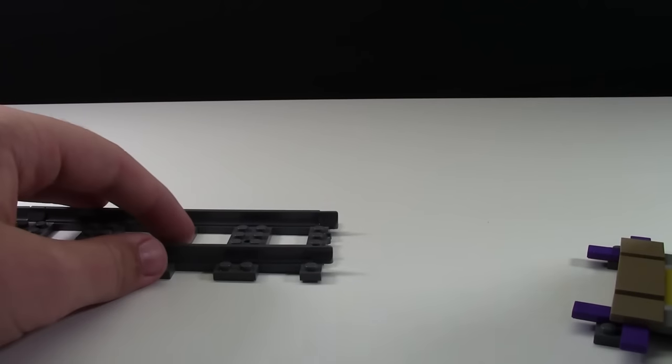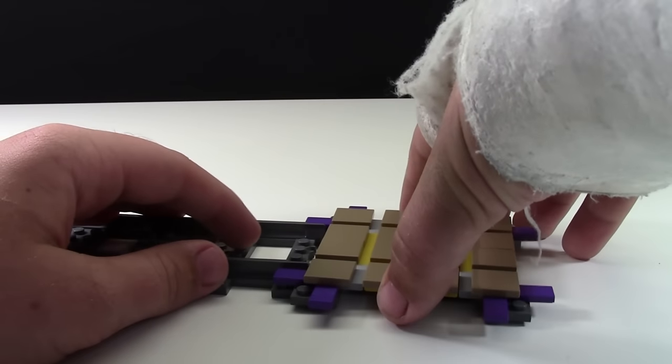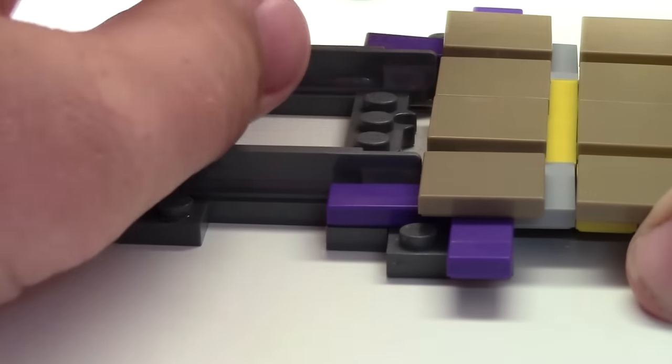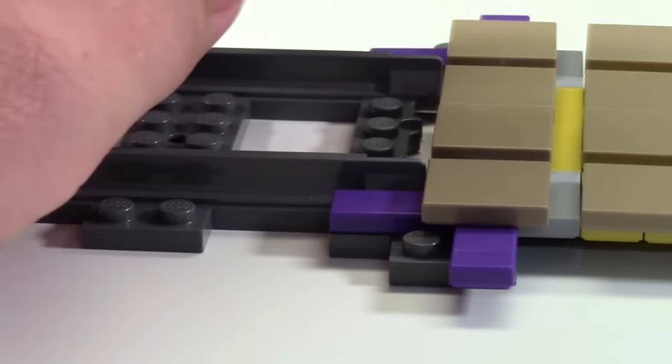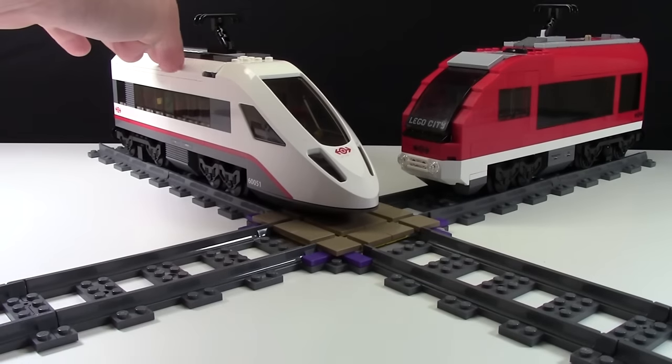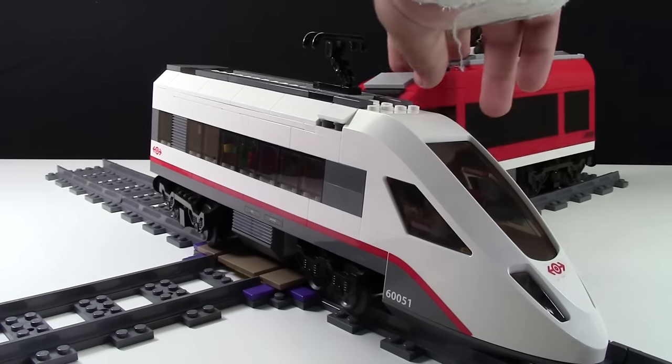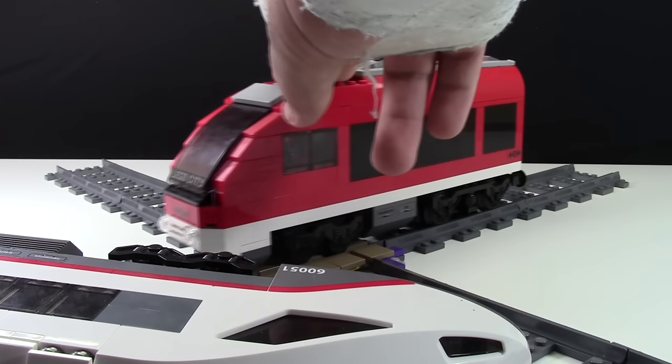To assemble it to the track, bring it up toward the track and use these tiles to fasten it on. Your four-way crossing is now complete, so you can have two trains going at once. But warning: if you have two trains, don't let them cross at the same time.